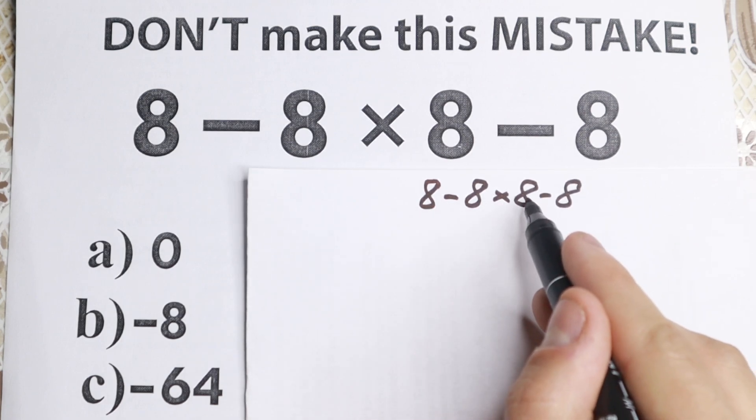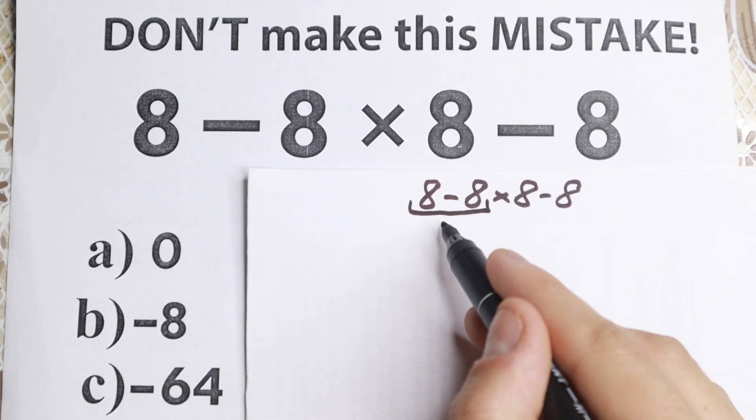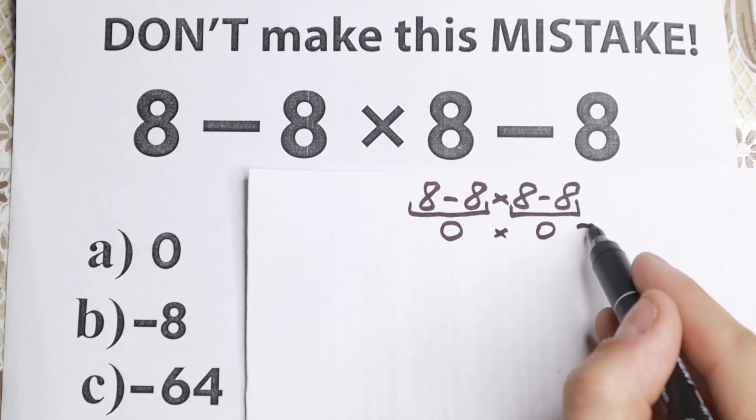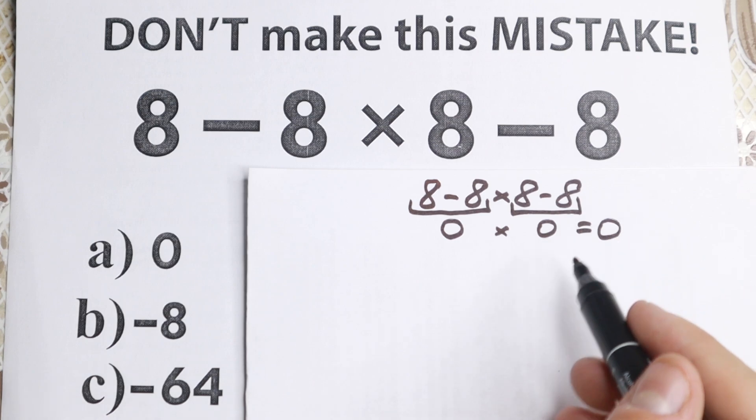They say okay, we have 8 minus 8 and 8 minus 8 right here and they want to subtract it. They say okay, 8 minus 8 equals 0 and right here 8 minus 8 equals 0, and then 0 times 0 equals 0. But this is not a correct approach, this is a wrong approach.